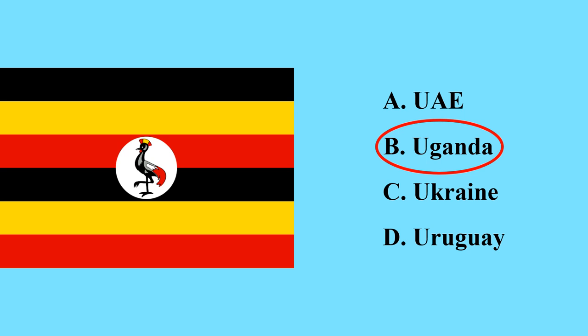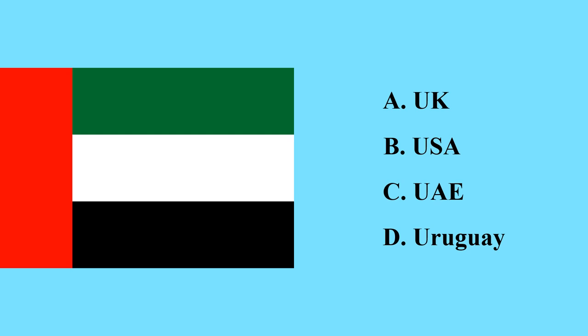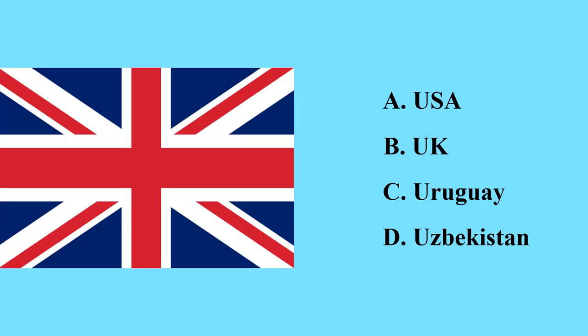This is the flag of Tuvalu, a country in Oceania. This is the flag of Uganda — it is a landlocked country in East Africa. This is the flag of Ukraine — Ukraine is the second largest country by area in Europe, next to Russia. This is the flag of the United Arab Emirates in the Arabian region.